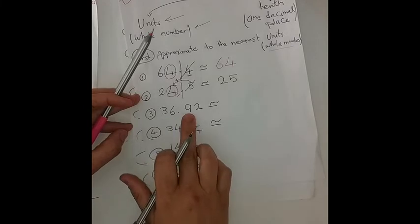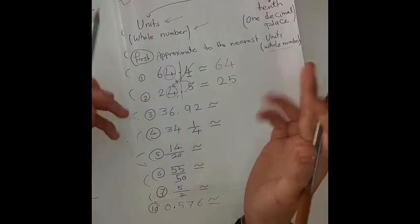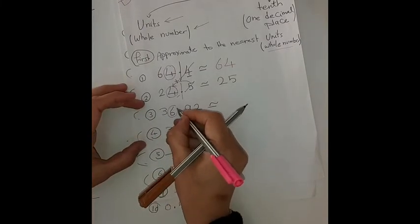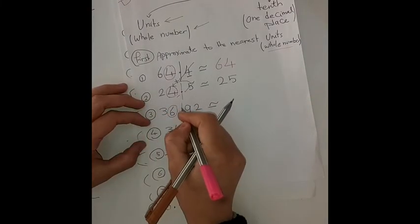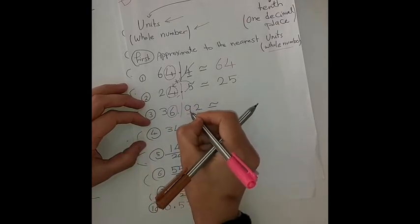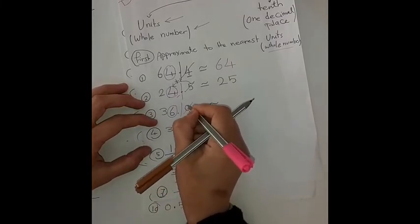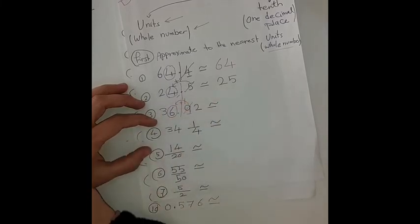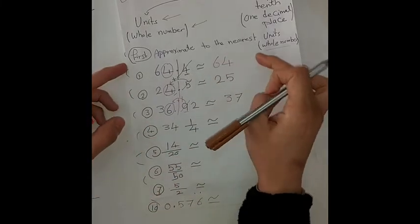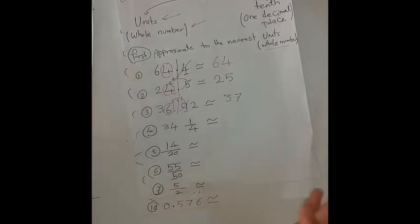Another example: 36.92. I want to approximate this decimal number to the nearest units. I circle the units place and build a whole. I look at the neighbor, which is nine. Nine is a rich digit, so I cancel it and add one to the units place. It becomes 37. This is how we approximate a decimal number to the nearest whole number.